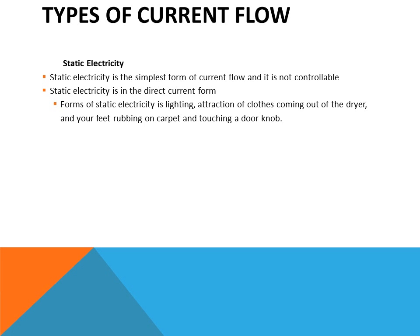Static electricity is the simplest form of current flow and it is not controllable. For example, a spark when you rub your feet on a carpet and touch a door knob will cause a very small shock. Other types of static electricity, like lightning outdoors, are uncontrollable but contain a very high potential of energy. Even friction tape, if pulled very rapidly, can cause static electricity to form.